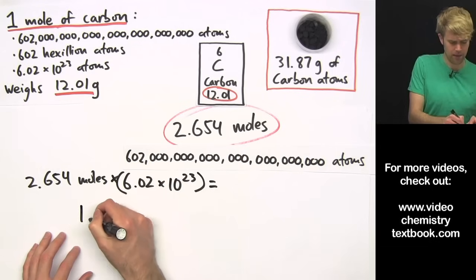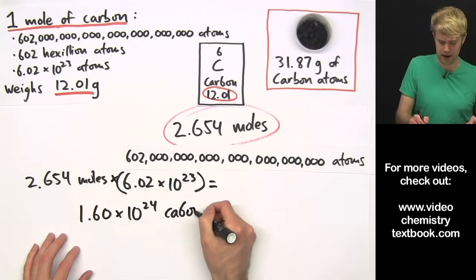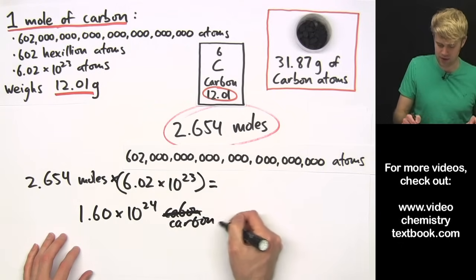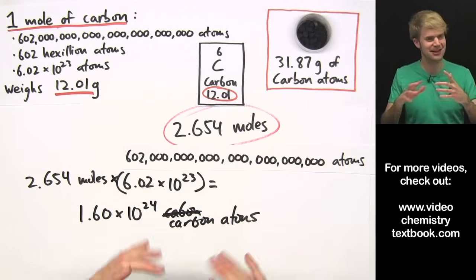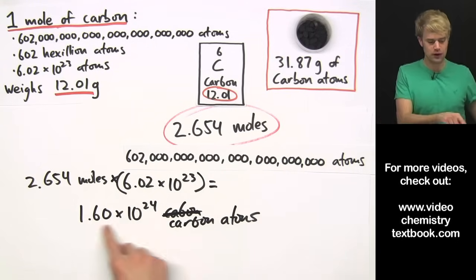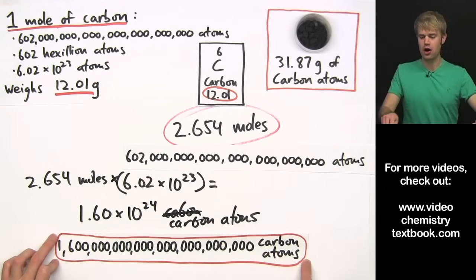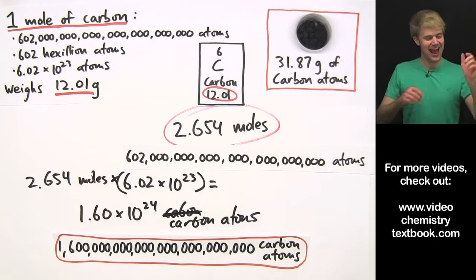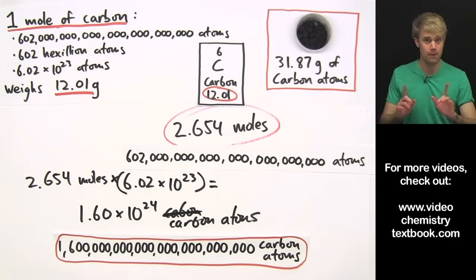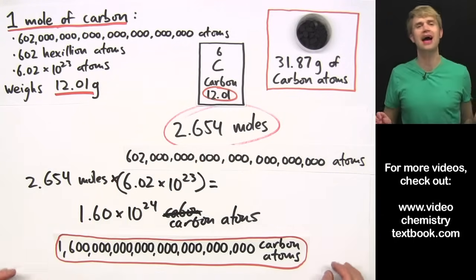When I do this, I can just plug it into a calculator. I'm going to get 1.60 times 10 to the 24th carbon atoms. And now, again, sometimes when we see things in scientific notation, it can be a little bit scary, a little bit tricky. So let's put this out of scientific notation. And this is the number of carbon atoms that we have when we put all those zeros in. A whole bunch. One heptillion, 600 hexillion carbon atoms. So that is how we can use moles to figure out the number of atoms we have in something.